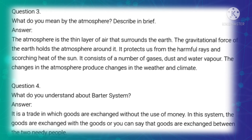It is also a source of mineral wealth. Third long-answer question: Describe the atmosphere briefly. Answer: The atmosphere is a thin layer that surrounds the earth. The gravitational force of the earth holds the atmosphere around it. It protects us from harmful rays and scorching heat of the sun, and consists of a number of gases, dust and water vapor. Changes in the atmosphere produce changes in the weather and climate. Fourth long-answer question: What do you understand about the barter system? Answer: It is a trade in which goods are exchanged without any use of money — goods are exchanged with goods between two needy people.